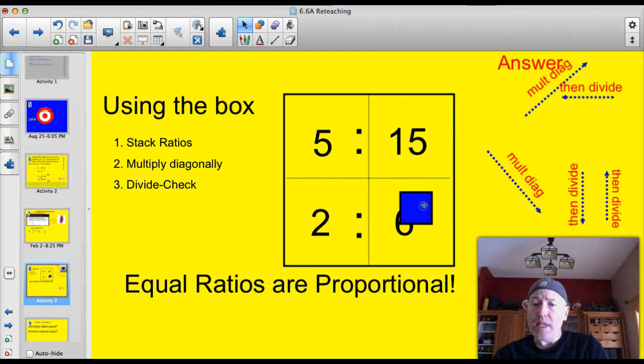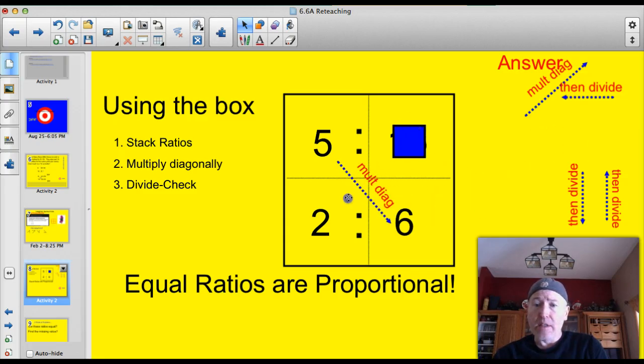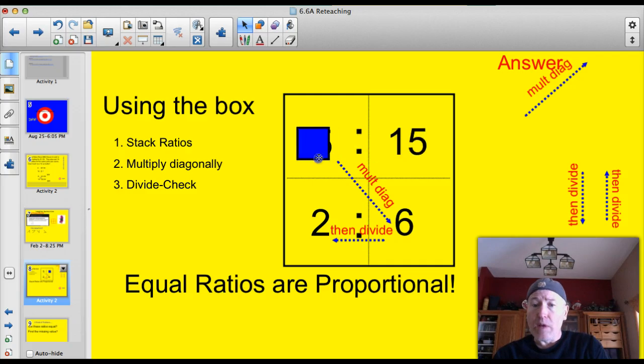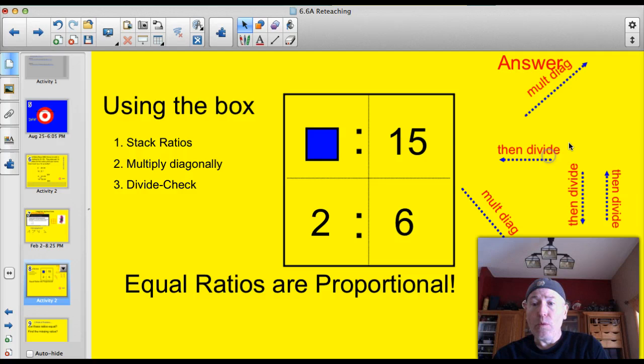So I do 2 times 15 is 30. 30 divided by 5 is 6. And of course, that works. 5 times 6 down here would be 30, 2 times 15 would be 30. So I'm proportional. But what if I took and, let me throw these guys out here, I just got rid of another number. Let's say that this was the number that was missing. It's always going to work. I still multiply diagonally, put this guy in a multiply diagonally, and then I'm going to divide the other two numbers.